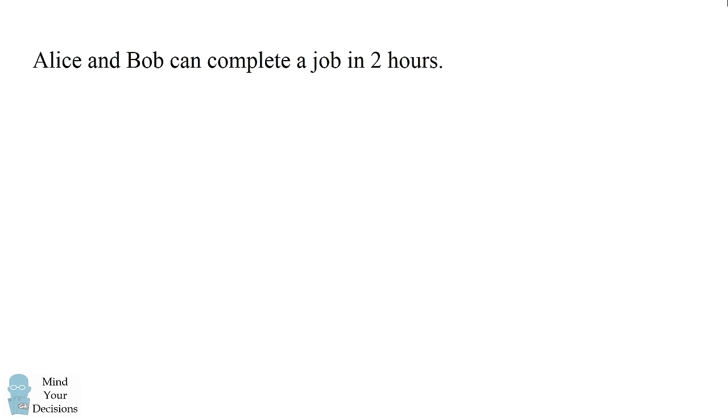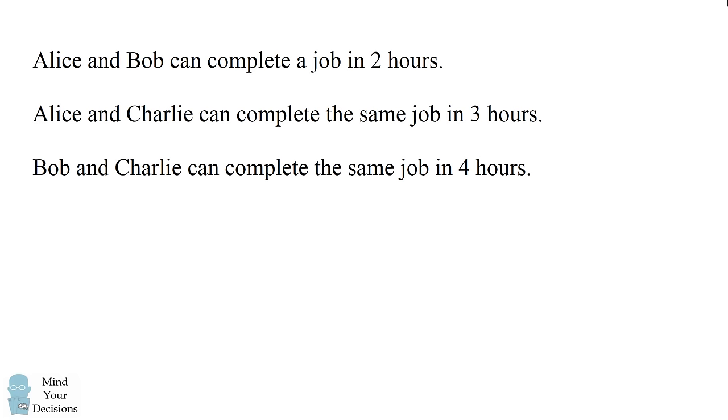Hey, this is Presh Talwalkar. Alice and Bob can complete a job in two hours. Alice and Charlie can complete the same job in three hours. Bob and Charlie can complete the same job in four hours.